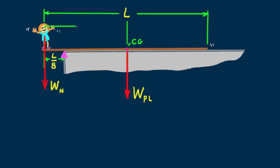So how far is the plank's center of gravity from the edge of the building? It's L over 2 from Nellie, so the distance is, some arithmetic here, L over 2 minus L over 8, which turns out to be 3L over 8. So our dimensions are shown.